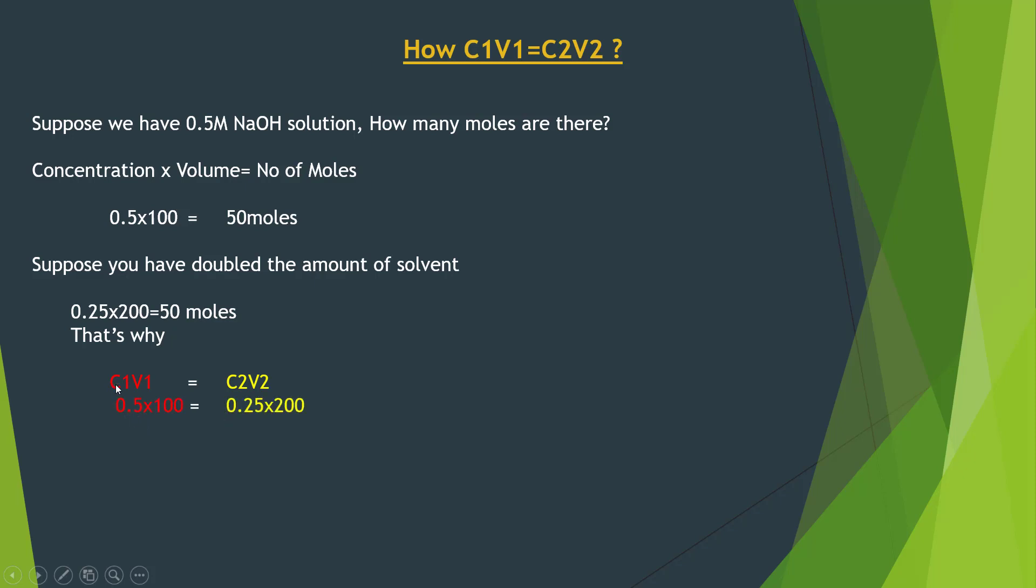Originally, there was 0.5 concentration and 100 ml solvent. Now, since you have doubled the volume, the concentration would get halved. Applying the operations, you would get 50 on both sides of the equation. I hope you have understood the logic and rationale behind C1V1 is equal to C2V2.